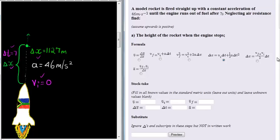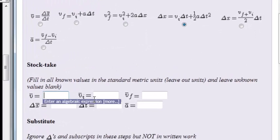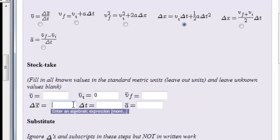Let's go into our answers in here. Okay, here's our stock taking. Stock taking we know that initial velocity is zero, future velocity we do not know, change and displacement is what we want to calculate, time is seven, and acceleration is 46 meters per second squared.